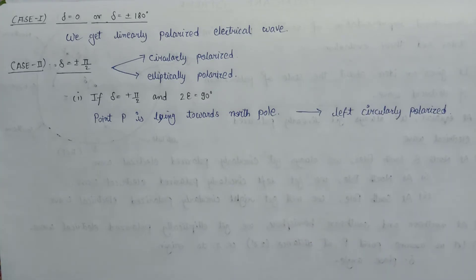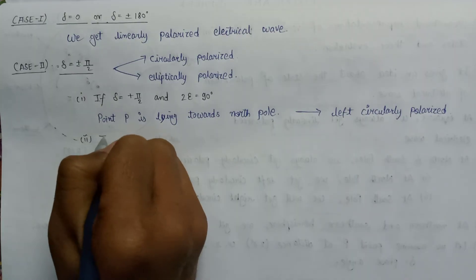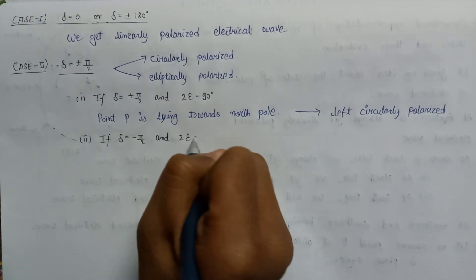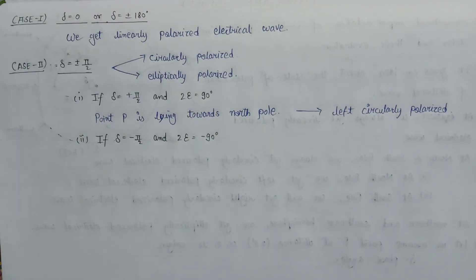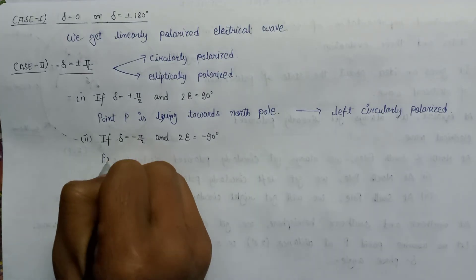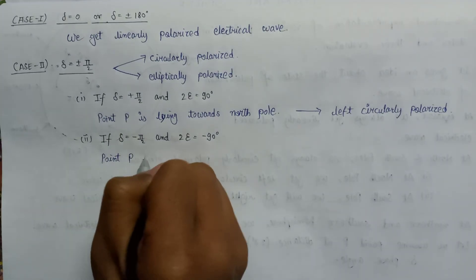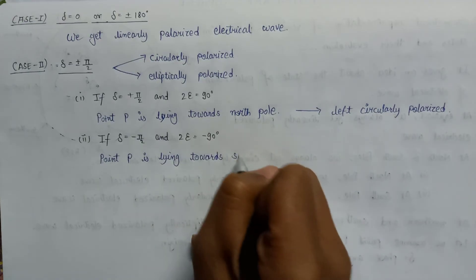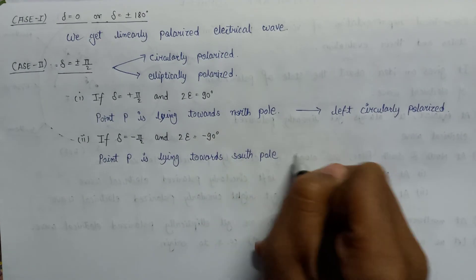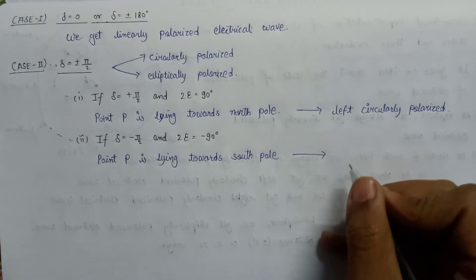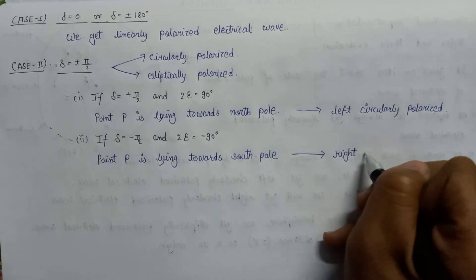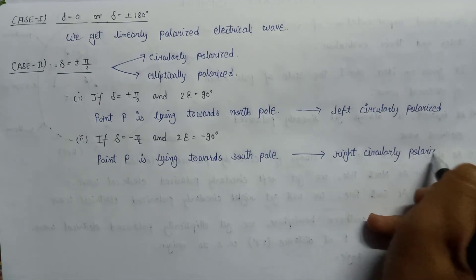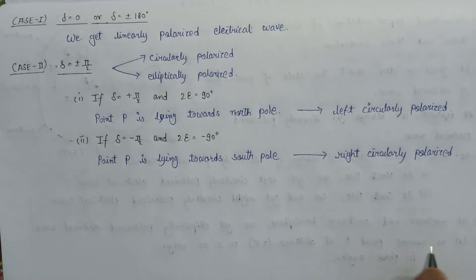Similarly, if the value of δ is −π/2 and the value of 2ε is −90°, then in this case the point P is lying towards the south pole. As we discussed, in this scenario we will get a right circularly polarized electrical wave. This is all about circular polarization.